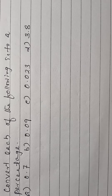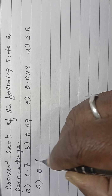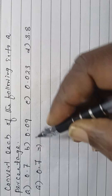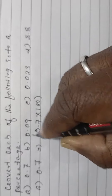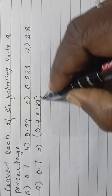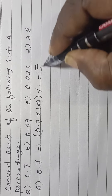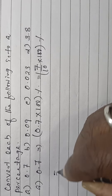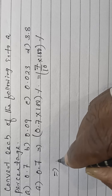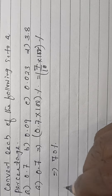Convert each of the following into a percentage. A: 0.7 — that is 0.7 into 100%, which is 7 by 10 into 100%, giving 70%.